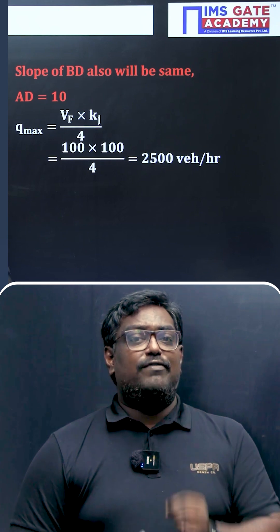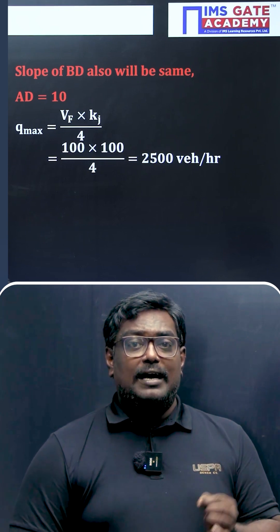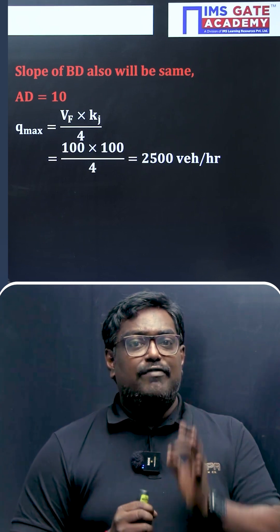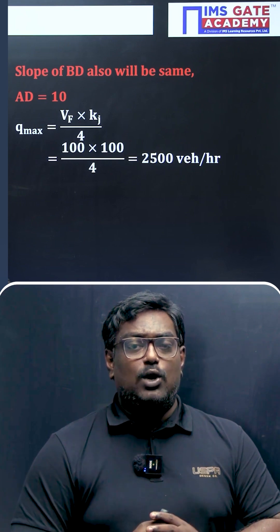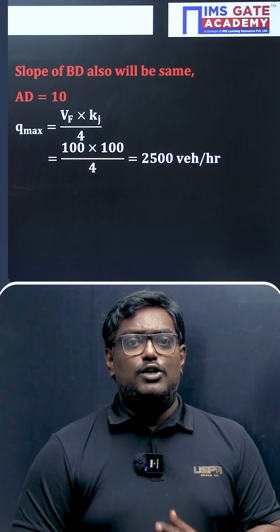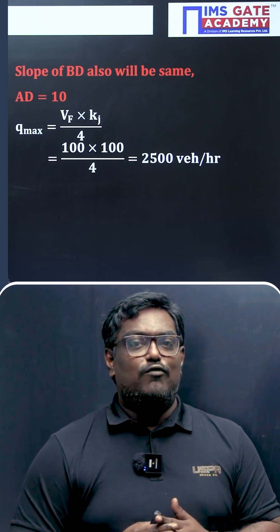...nothing but jam density, and vf is nothing but free flow velocity. From the graph it is evident: vf equals 100 and kj equals 100. On substituting these values, you will get maximum traffic flow condition is 2500 vehicles per hour.